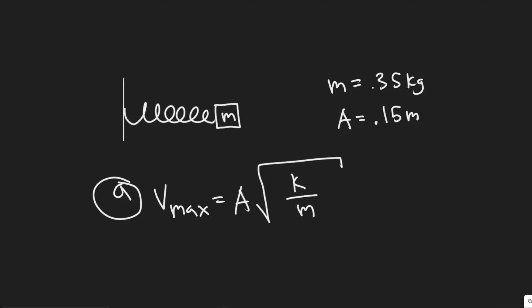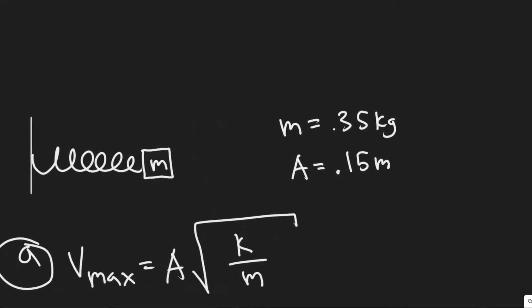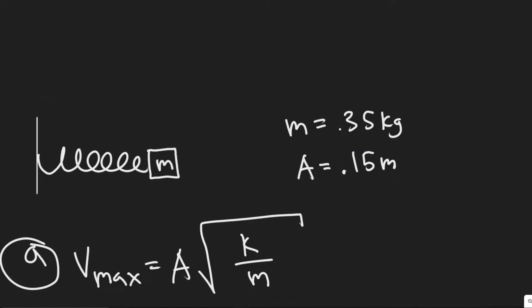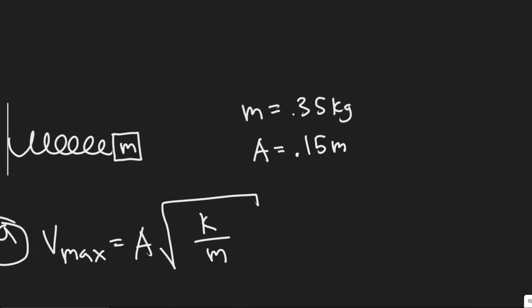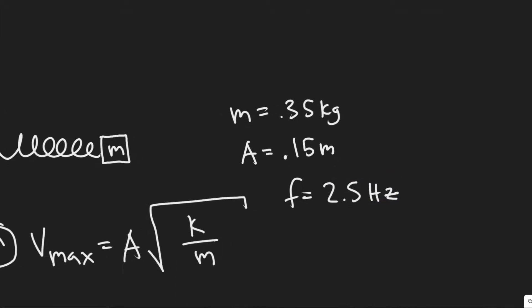In this problem, we're told a 0.35 kilogram mass at the end of a spring oscillates 2.5 times per second with an amplitude of 0.15 meters. We need to determine: a) the velocity when it passes the equilibrium point, b) the velocity when it is 0.1 meters from equilibrium, c) the total energy of the system, and d) the equation describing the motion of the mass assuming that at t equals 0, x was a maximum. When they say something oscillates 2.5 times per second, the frequency is 2.5 hertz.